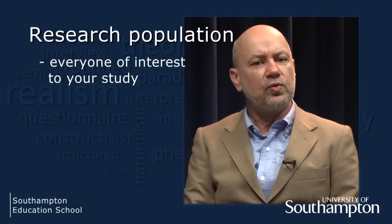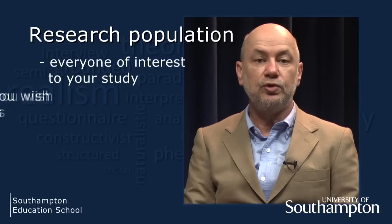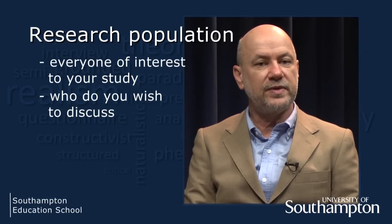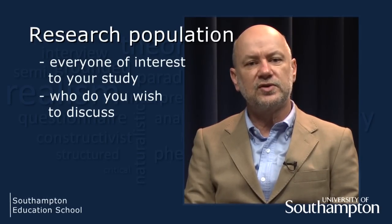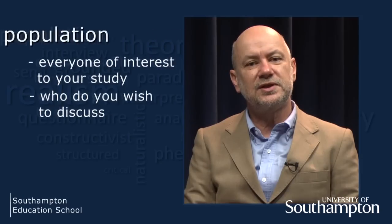Before we move on to specific ways of selecting our participants, there are two concepts we need to be familiar with – research population and research sample. Your research population is everyone that you are interested in. When you get to the final chapter of your dissertation, who do you wish to discuss and make comments about? If you are examining the use of iPods by university students in the UK, then your population is all university students in the UK – a very daunting task. It would be better to restrict your study to just one university, so the population would be all university students in the University of Southampton.